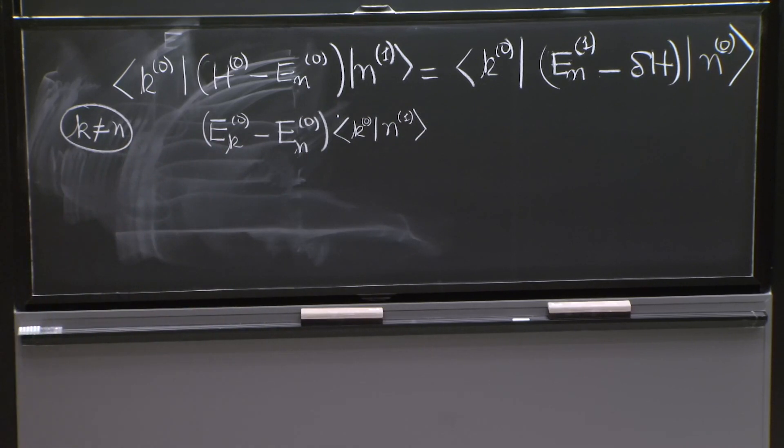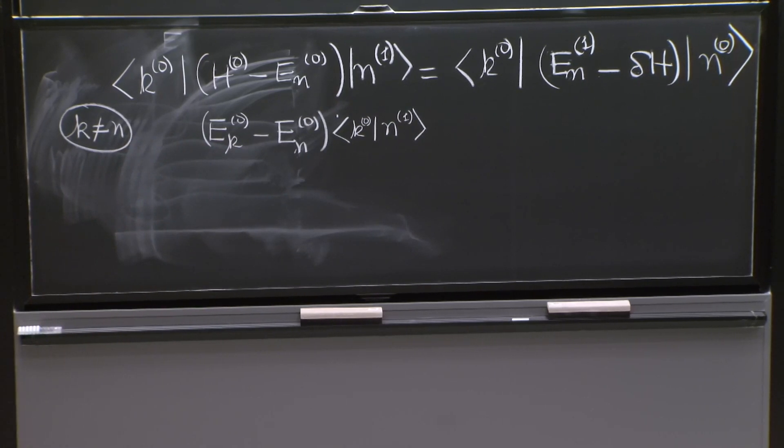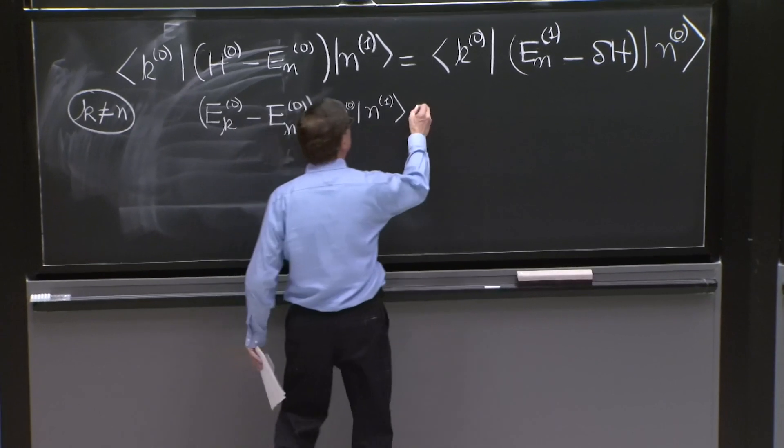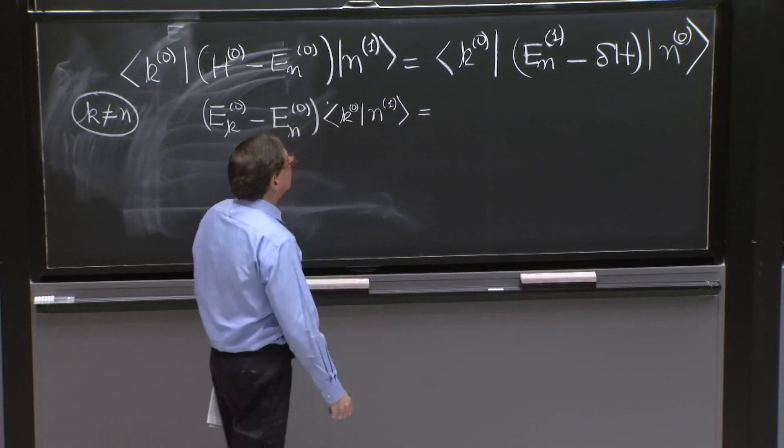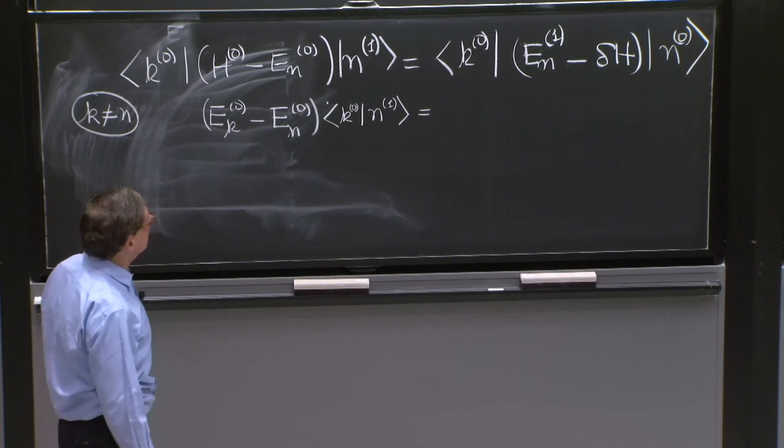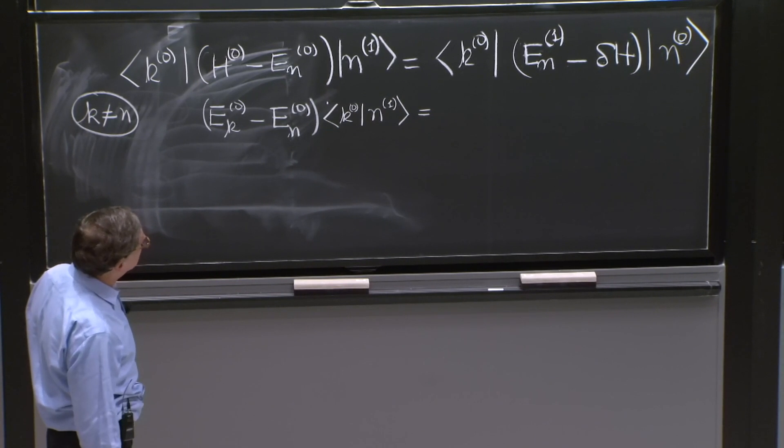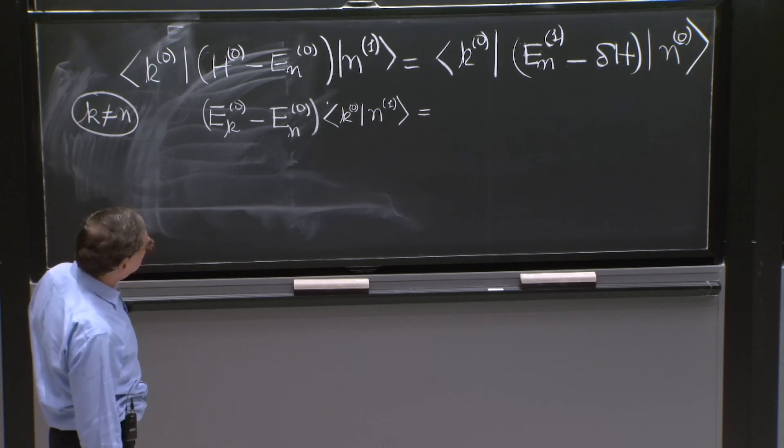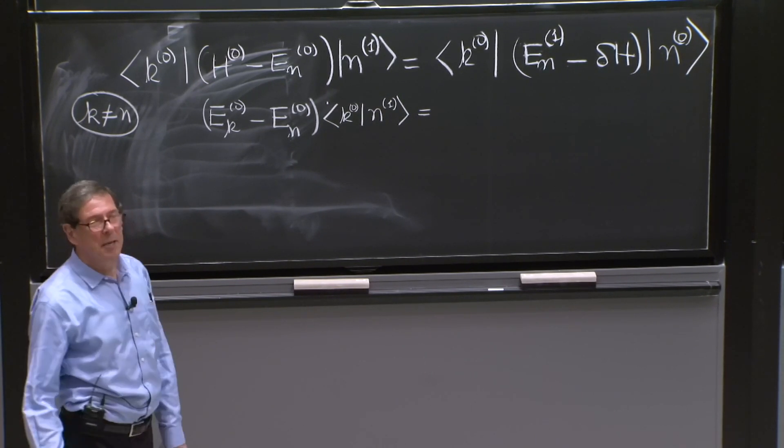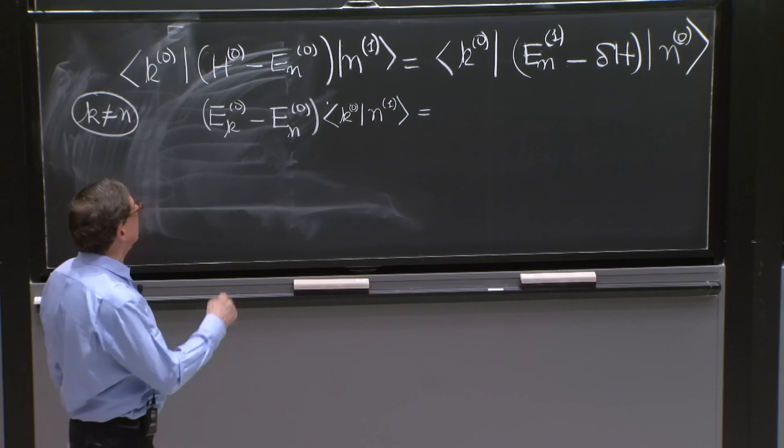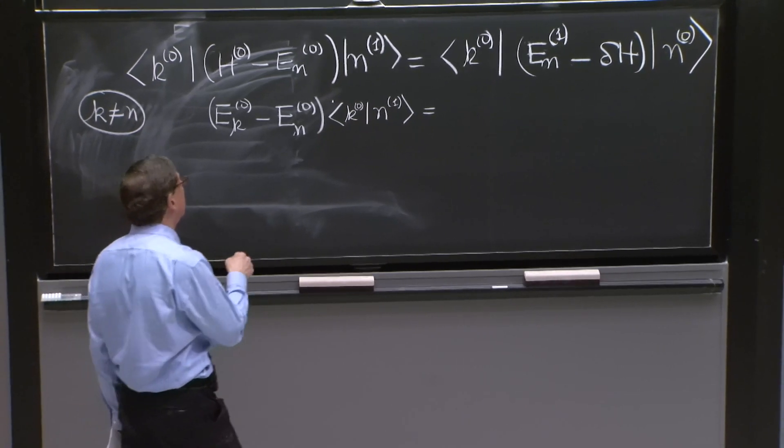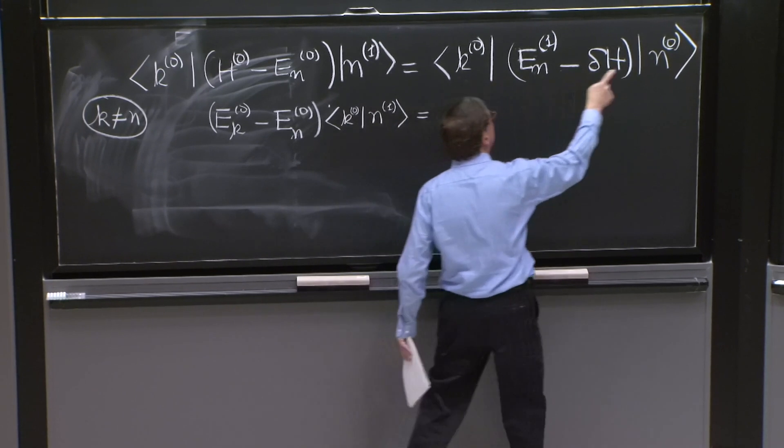This simplifies this to E_k0 minus E_n0 times the overlap of k0 with n1. That's the left-hand side. Alright, let's see what this is. First term, the E_n1 is a number, so I must ask myself what happens when k0 meets n0?